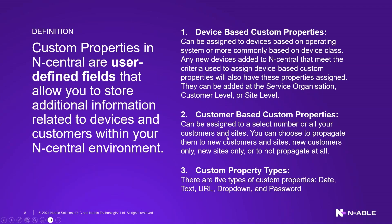There are five custom property types. Date type — for example, storing the date of a system warranty or purchase date. Text type — effectively any string value, alphanumeric or numeric. URL type — which I've honestly never used. Drop-down — which has multiple data points you can use. And password type, which probably should be called 'encrypted type,' because it simply hides and encrypts the information stored in that field so no other tech can ever see it.